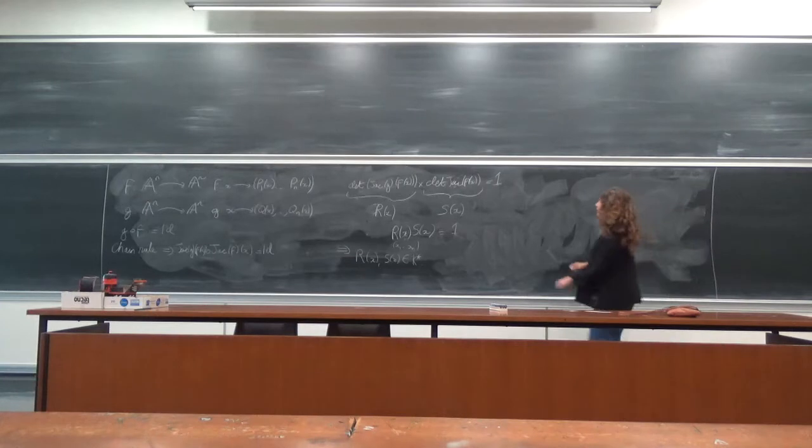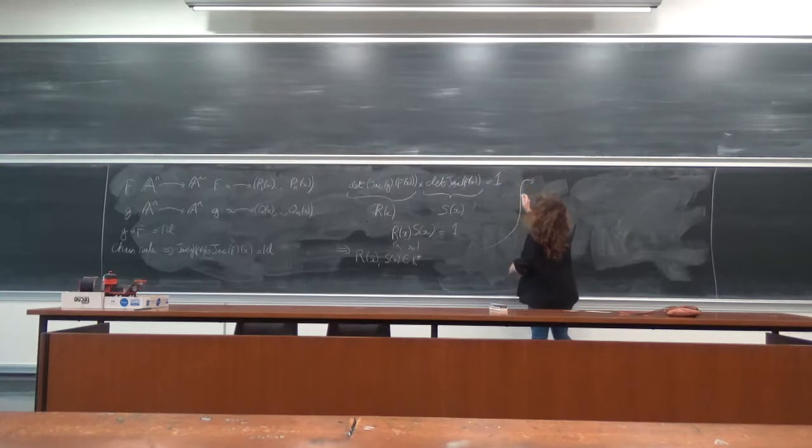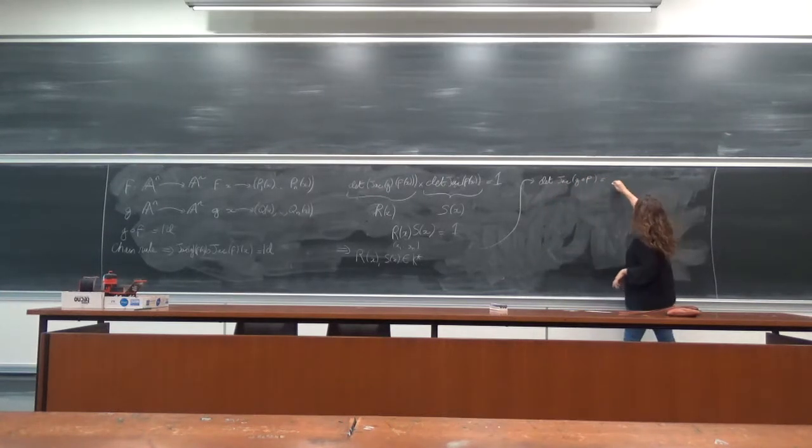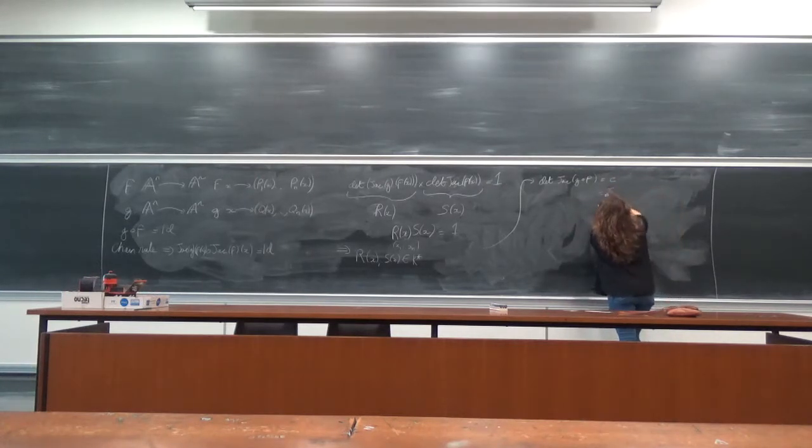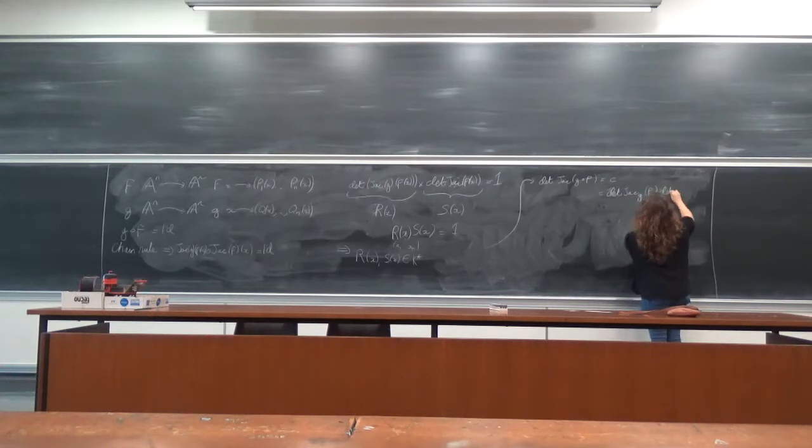And since they are constants, this tells me that the determinant of the Jacobian of g around f, which I'm going to call c, is equal to the determinant of the Jacobian of g evaluated at f multiplied by the determinant of the Jacobian of f.